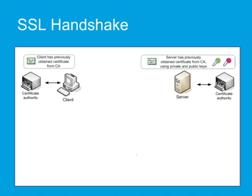We are ready to describe what actually happens during what is called the SSL handshake. The client contacts a server and sends information such as the client's SSL version number, cipher settings, session-specific data, and other information that the server will need to communicate with the client using SSL. A number of encryption cipher suites are available, such as RSA and Diffie-Hellman, and the client and the server negotiate the choice.